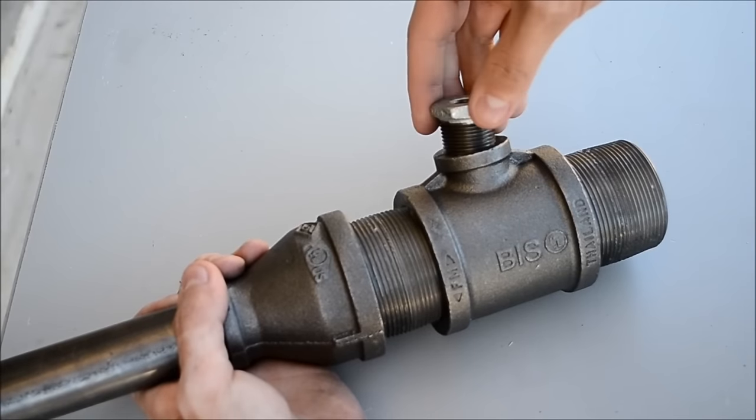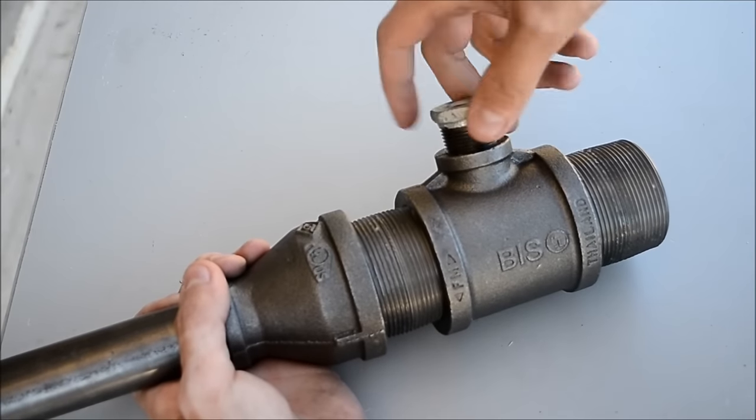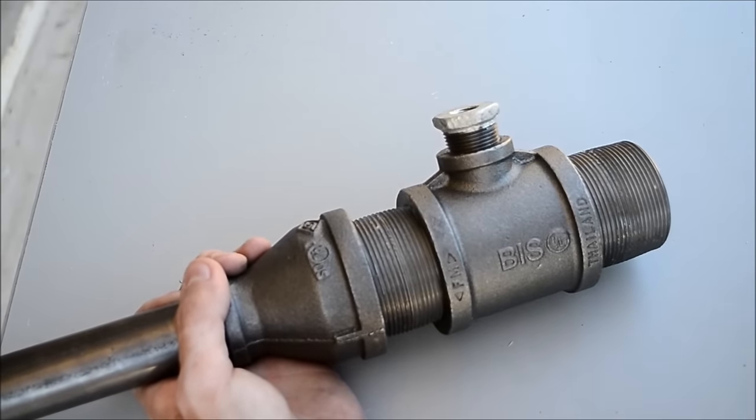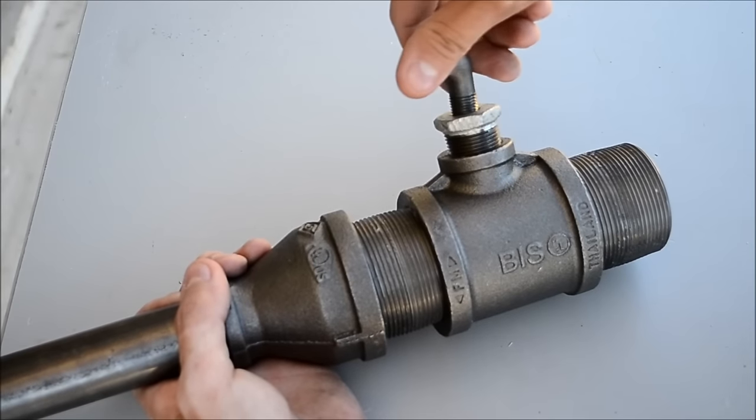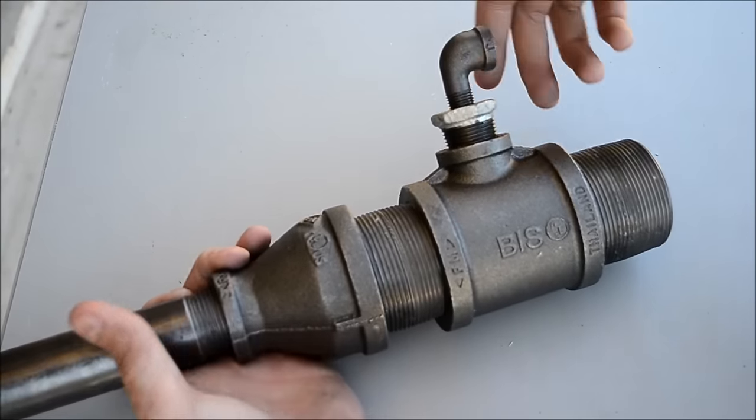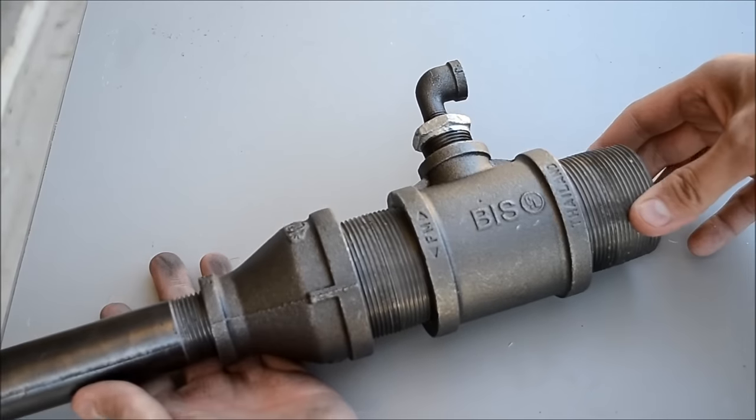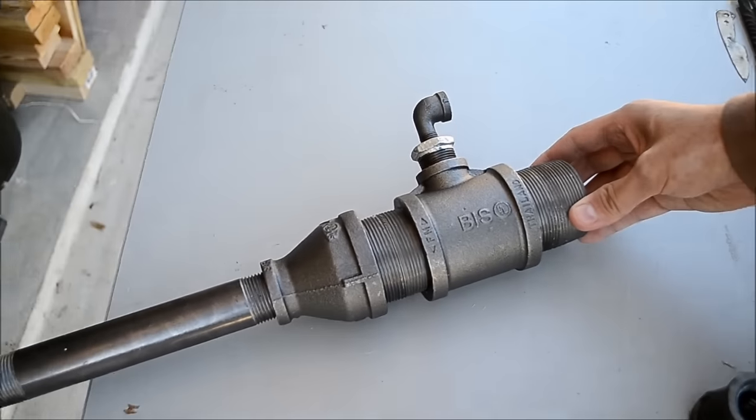That's the 3 quarter inch hex bushing. The 1 inch street elbow, and then to the street elbow we're going to add a piece later.